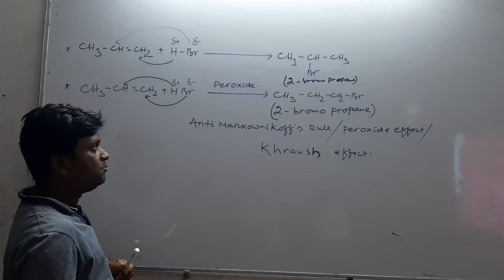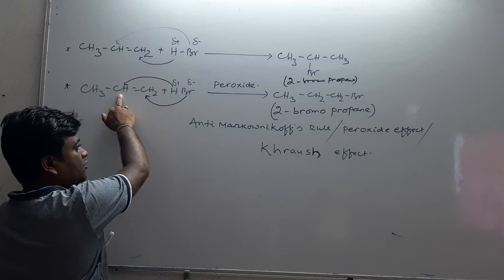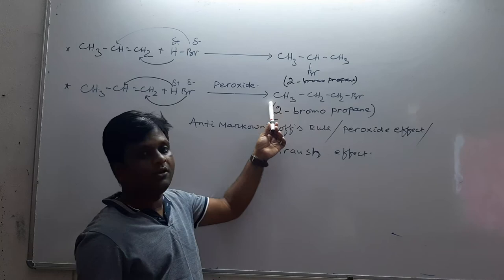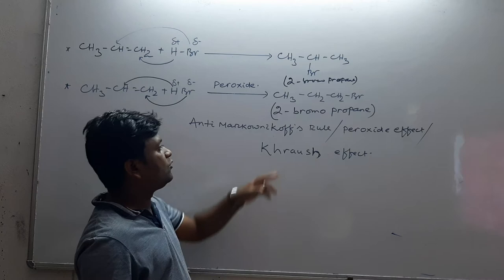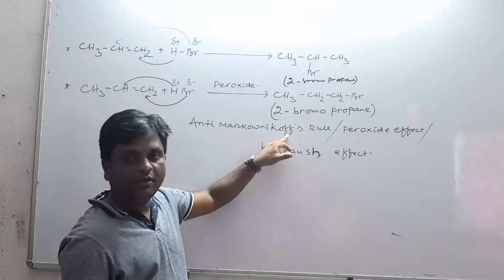This means bromine goes to this carbon and hydrogen moves to that carbon atom. So the product is 1-bromo propane. It is known as anti-Markovnikov addition.